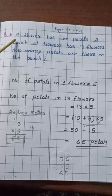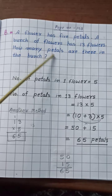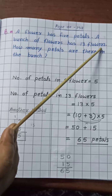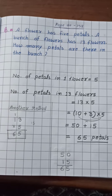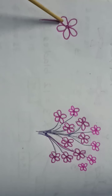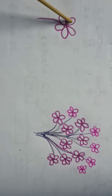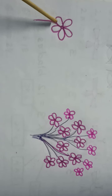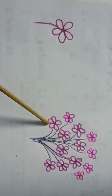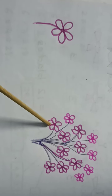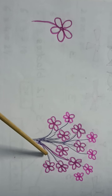A flower has 5 petals. A bunch of flowers has 13 flowers. How many petals are there in the bunch? You can count here children: 1, 2, 3, 4, 5. So total 5 petals are in one flower. But how many total numbers of flowers? Total numbers of flowers are 13. So we need to find total numbers of petals in 13 flowers.